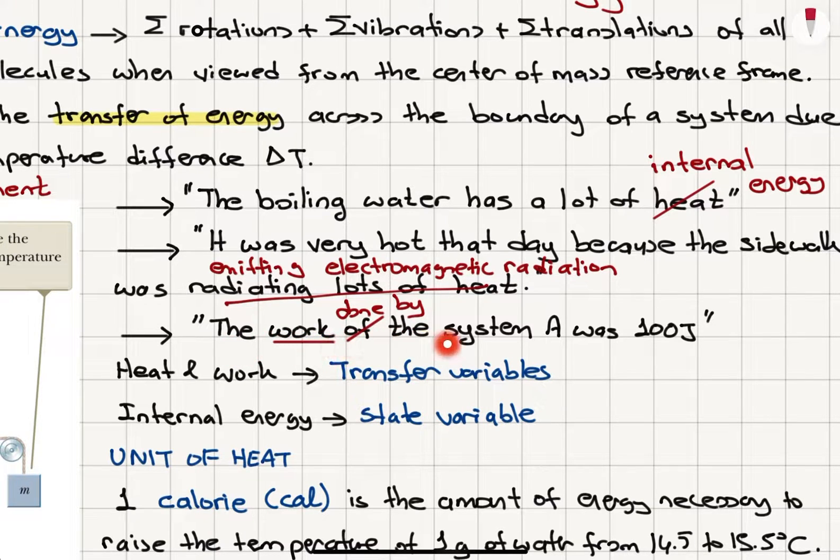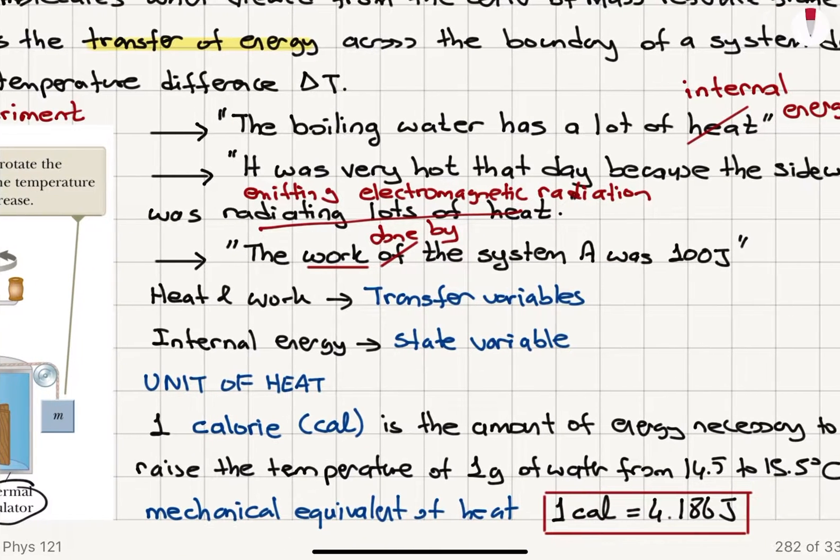And finally, the work of the system A was 100 joules. Now, similar to heat, work is describing transfer of energy. So we can only talk about work done by the system A or work done on the system A. So these are the physically correct statements.